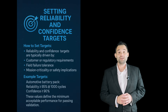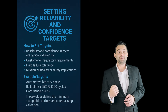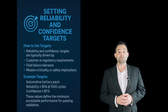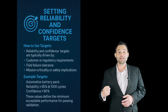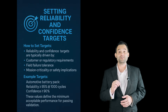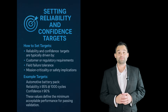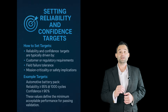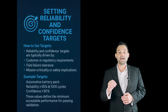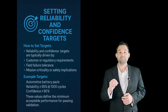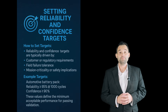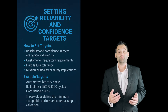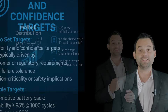Let's now talk about setting reliability and confidence targets. Reliability and confidence targets are typically driven by customer or regulatory requirements, field failure tolerance, mission criticality, safety implications, or competitive benchmarking. Here are some example targets: for an automotive battery pack, reliability greater than or equal to 95% at 1,000 cycles, with confidence greater than or equal to 90%. These values define the minimum acceptable performance for passing validation.